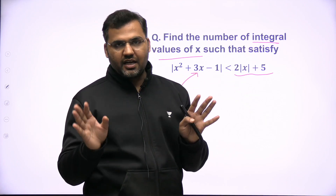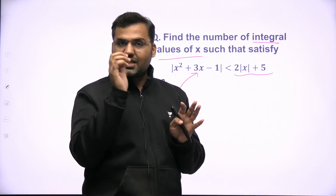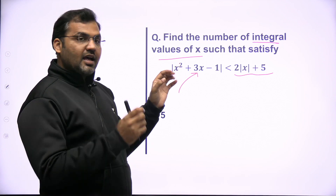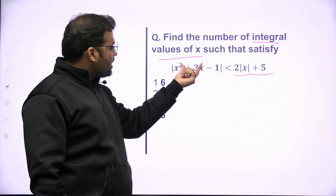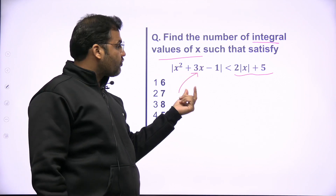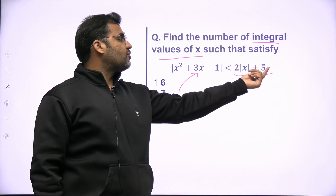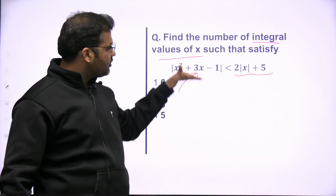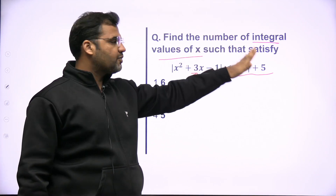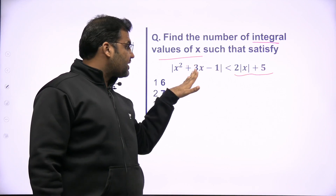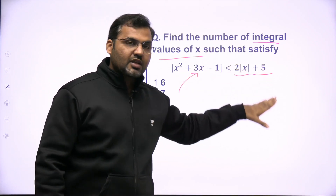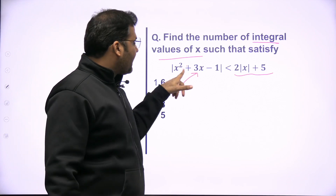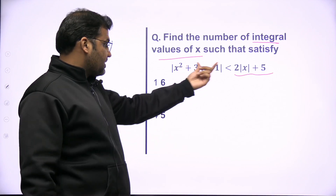Understanding and reading are different. Reading means you are simply reading it; understanding means you get to know what the question is actually asking. I am looking for those integral values of x such that when you put them in, the value on the left-hand side should be less than 2 times mod of x plus 5. You put a value of x on both sides — left-hand side should be lesser than the right-hand side.